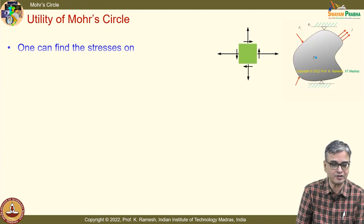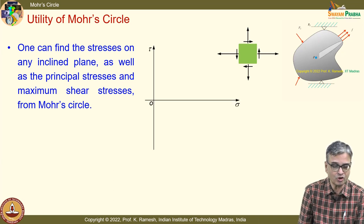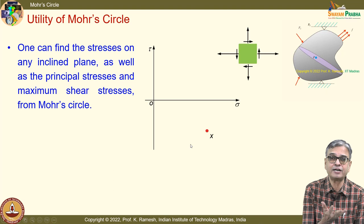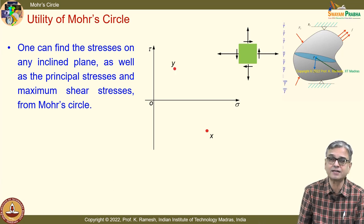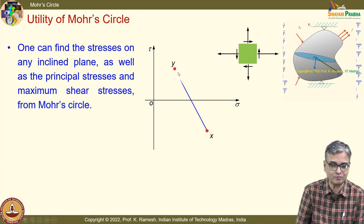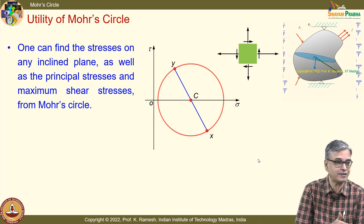Once you have seen the stress transformation law, we also looked at how this can be written in the form of a circle. We plotted a graph between σ and τ. Given the stress state pictorially, for positive shear stress on the x plane, we plot it downwards. The reason is: whatever movement you do in the real plane, you should do the same in the Mohr circle plane. If you rotate clockwise, rotate clockwise in the Mohr circle also. The circle contains the information about the state of stress on all possible infinite planes through the point of interest.